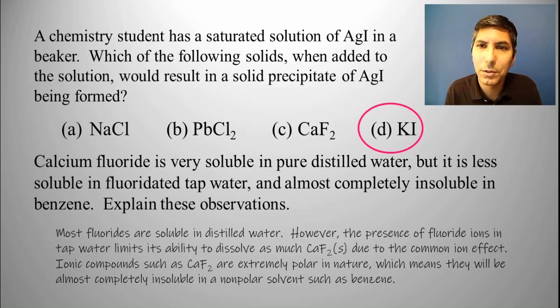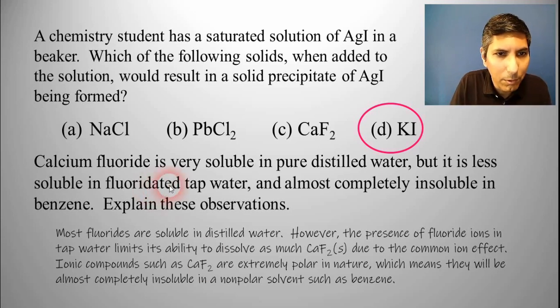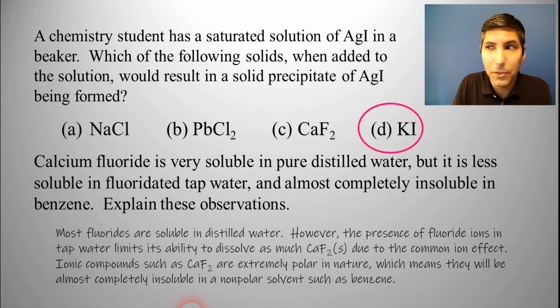And so the presence of those fluoride ions in that water is going to limit its ability to dissolve as much calcium fluoride due to that common ion effect. It's almost like this water has a capacity to dissolve a certain number of fluoride ions. And the fluoride from the fluoridation is taking up some of that capacity. How about the benzene?